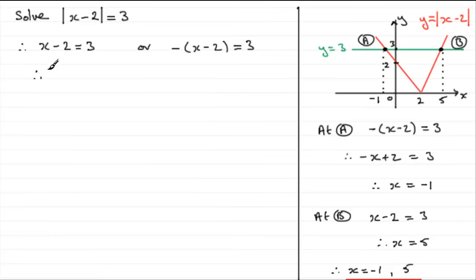So you end up with, for this one, you end up with x equals 5. And for this one, you end up with x equals minus 1. So that's the other way.